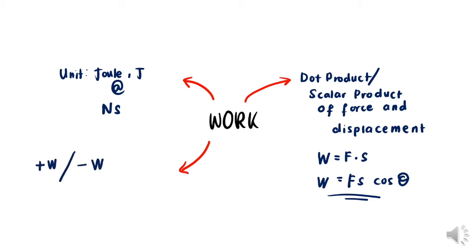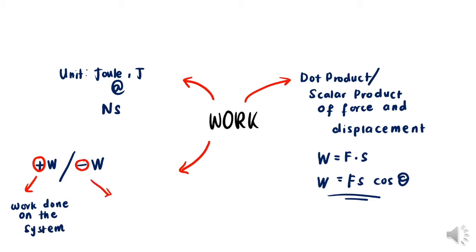The unit of work is Joule, or Newton metre. For work, we have positive work and negative work. Although we know that it's a scalar product with positive and negative values, that doesn't mean it has direction. Positive means that the work done is on the system. Negative means that the work done is by the system.